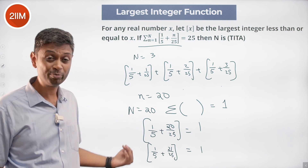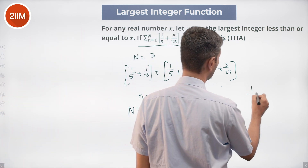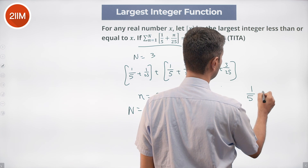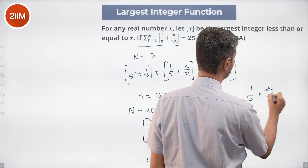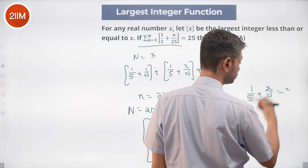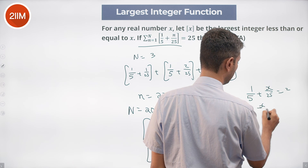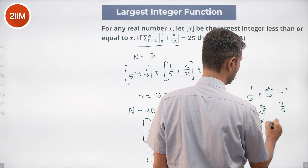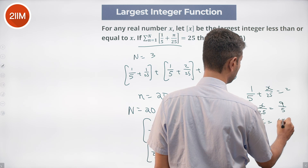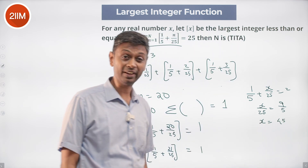When does 1/5 become 2? I solve: floor(1/5 + x/25) = 2, so x/25 should equal 9/5, meaning x should be 45. When x goes to 45, the floor becomes 2; until then it stays 1.